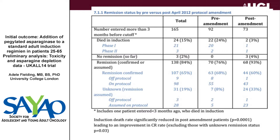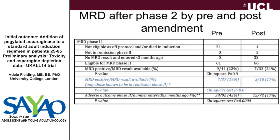An early way to look at that would be to examine MRD. We had a look at remission rates first, and there was no apparent difference in remission rates between pre- and post-amendment. When we looked at MRD at the end of two phases of induction, again we didn't see any difference in the rate of MRD positivity after making the changes. So looking early on, it didn't appear to have negatively impacted the anti-ALL activity of our regimen.